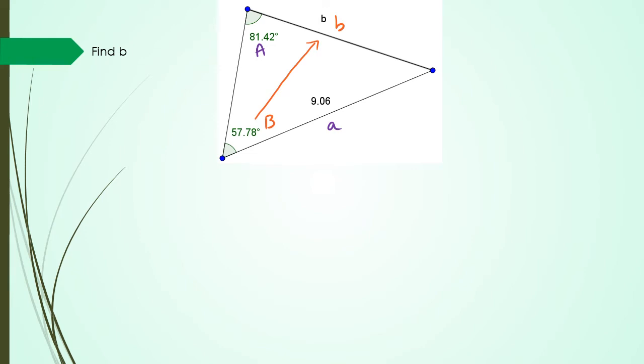So if we look at our equation we have sine of A divided by A is equal to sine of B divided by B. Now you could substitute all the values and rearrange, but because I know that when you're dealing with one fraction equal to another fraction I can manipulate this right from the get-go.